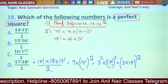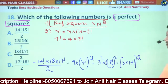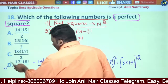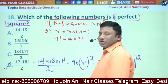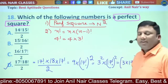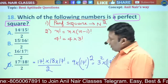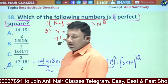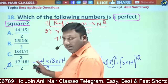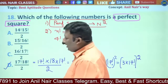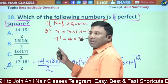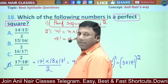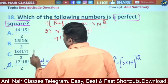Is it of the form square of a number? Definitely yes. So the answer for this question is 17! × 18! divided by 2. Let us also see why the other options are not perfect squares.